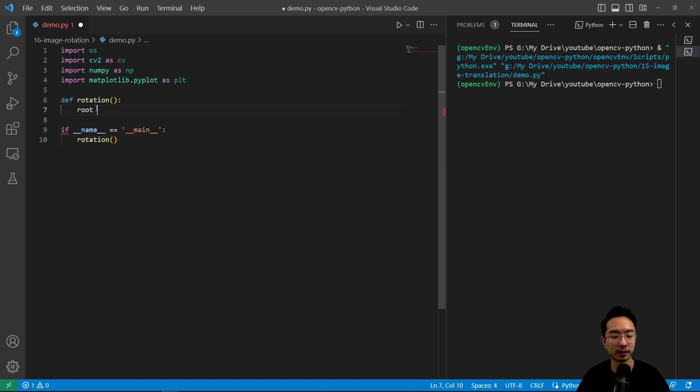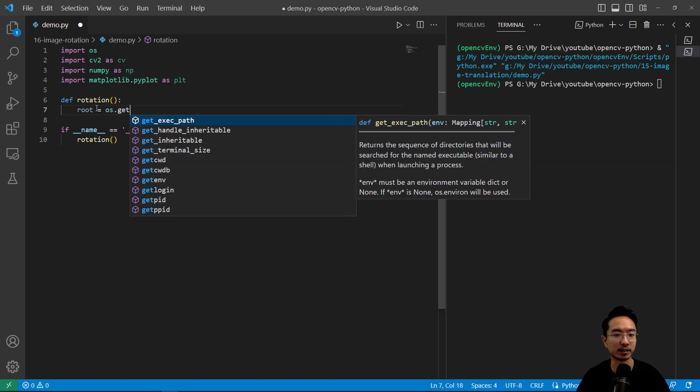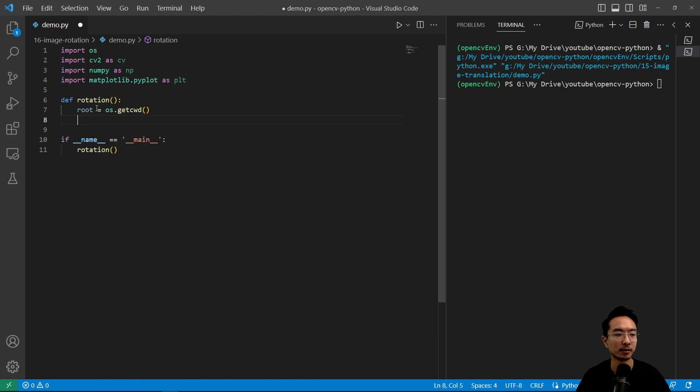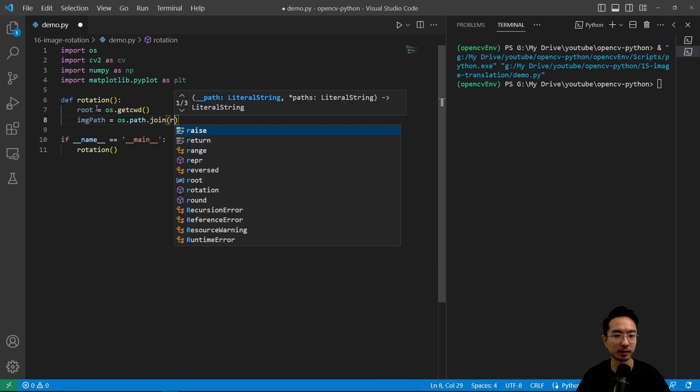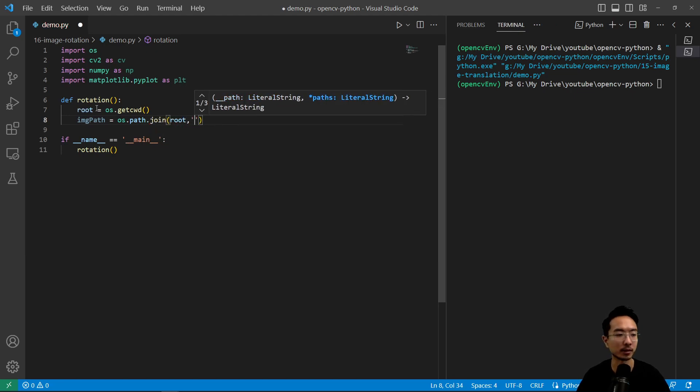So inside of here we're going to go ahead and read in our file path. So os.getcwd. And our image path is going to be os.path.join. And then pass in roots. And our path name is demo images. Call it qpic1.jpg. And then image equals cv.imread. We're reading in our image. We pass in the image path.